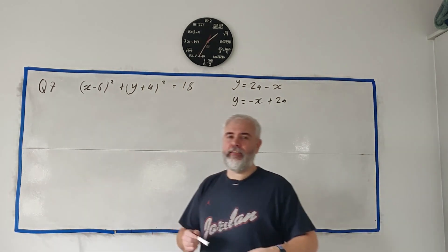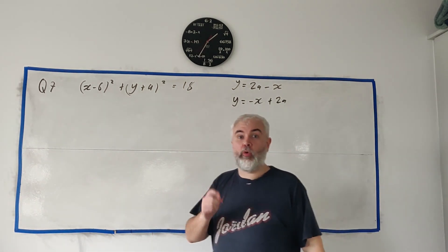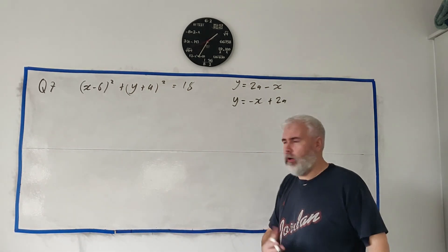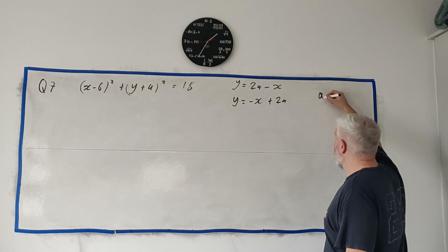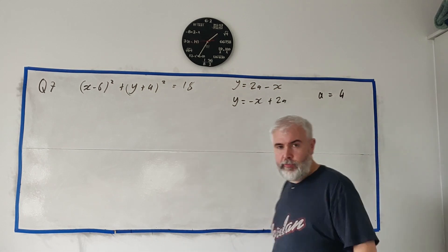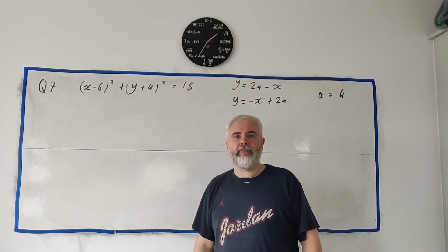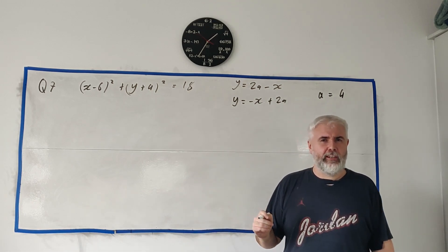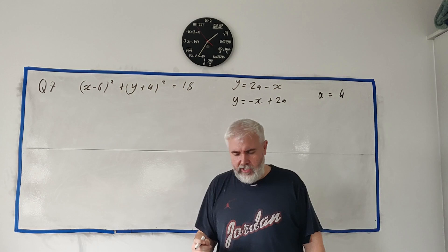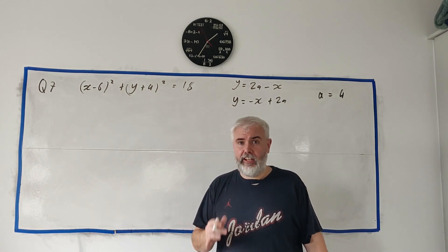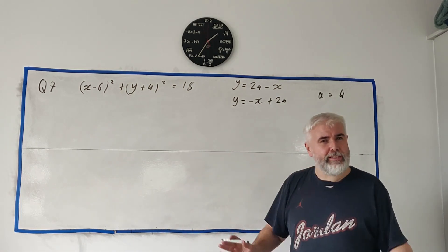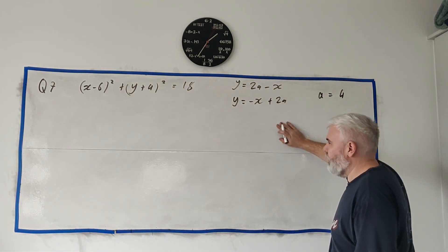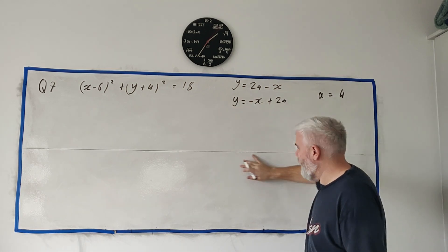So part B can be a little difficult to understand. First they say for the greater value of A, we got two A's, we got A is 0 and A is 4, so that's saying that A equals 4. That's the first bit of information. And they say find the equation of the diameter which is perpendicular to the given tangent.